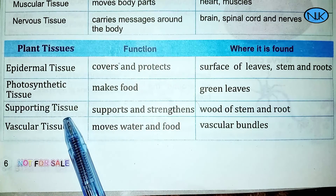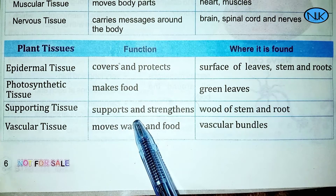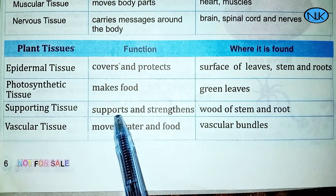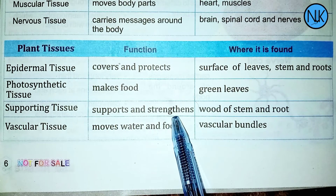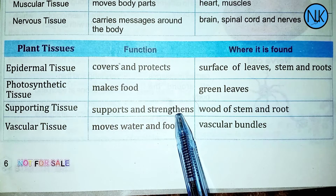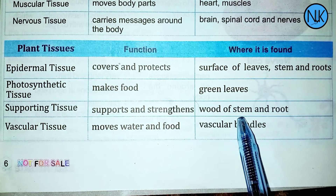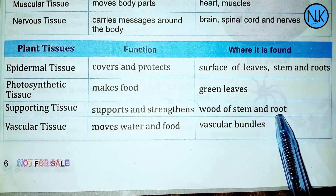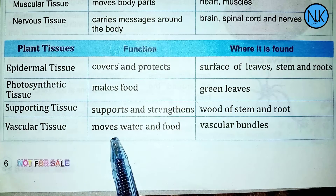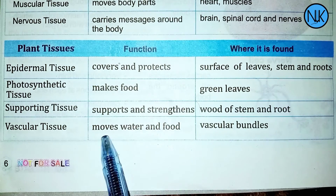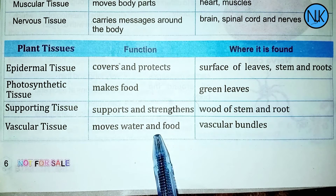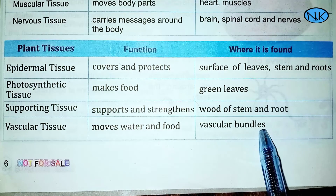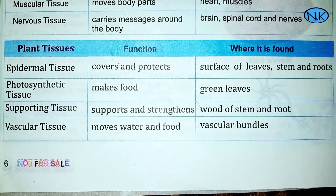Supporting tissue supports and strengthens the plant. It is found in wood, roots, and stems. Vascular tissue moves water and food through the plant; it is found in the vascular bundle.